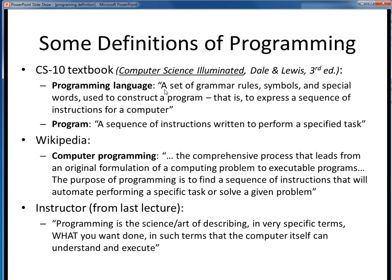Here are a couple of examples. An earlier version of the CS10 textbook defines a programming language as a set of grammar rules, symbols, and special words used to construct a program — that is, to express a sequence of instructions for a computer. While the program is defined as a sequence of instructions written to perform a specified task. Wikipedia defines computer programming as the comprehensive process that leads from an original formulation of a computing problem to executable programs. The purpose of programming is to find a sequence of instructions that will automate performing a specific task or solve a given problem. And repeating the definition from the last lecture segment, programming is the science or art of describing, in very specific terms, what you want done, in such terms that the computer itself can understand and execute.